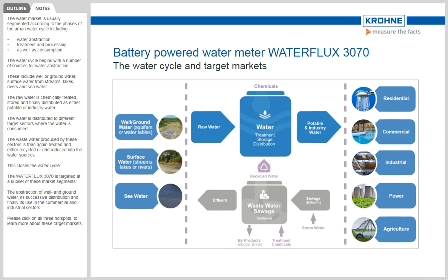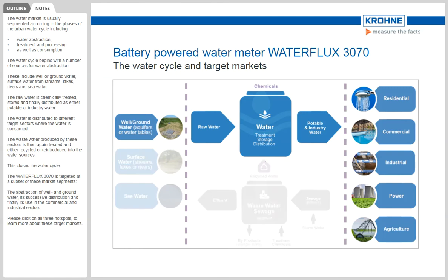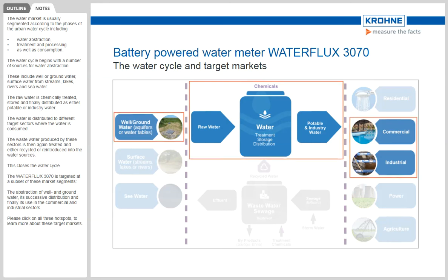This closes the water cycle. The Water Flux 3070 is targeted at a subset of these market segments: the abstraction of well and ground water, its successive distribution, and finally its use in the commercial and industrial sectors. Please click on all three hotspots to learn more about these target markets.